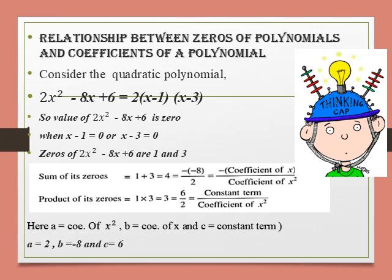The polynomial is 2x square minus 8x plus 6. Splitting the middle term — we are aware of this process because in standard 7th, 8th and 9th we have practiced this method, so now you are the master of finding factors by splitting the middle term. So 2x square minus 8x plus 6 equals 2 into (x minus 1) into (x minus 3). To find the zeros of the polynomial, we take the polynomial's value as 0, giving x minus 1 equals 0 or x minus 3 equals 0. Therefore x equals 1 and x equals 3.